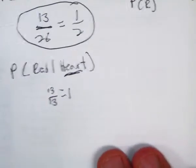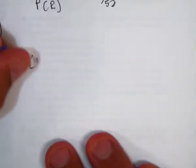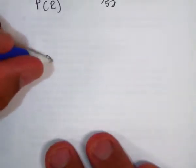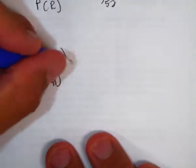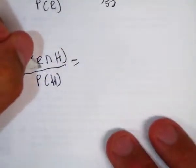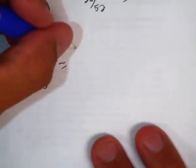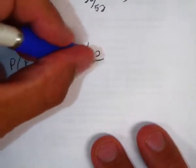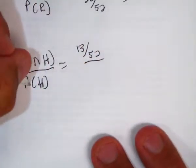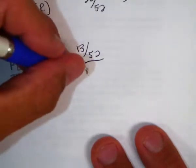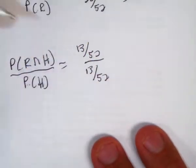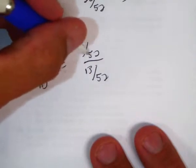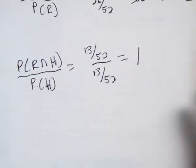Let's do it the rule way now. Probability of red and a heart over the probability of a heart. How many cards in a deck are red and hearts? 13. How many cards in a deck are hearts? 13. Anything over itself is 1. So 13 over 52 over 13 over 52 is 1. We get 1 either way.